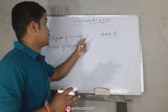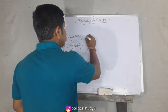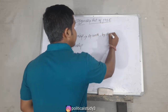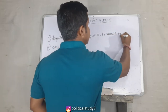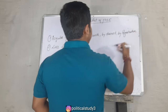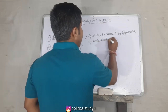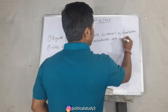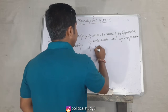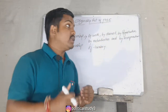Acquisition of Citizenship means how a person can acquire the citizenship of India. There are five ways through which a person can acquire citizenship of India: first by birth, second by descent, third by registration, fourth by naturalization, and fifth by incorporation of territory.